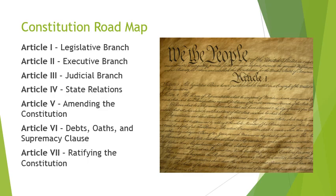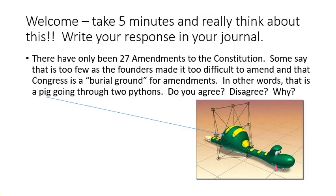Here's your constitution roadmap. It's important to have a good idea of the general layout. The legislative branch was created in Article One, executive branch in Article Two, judicial branch in Article Three. We'll get into state relations in Article Four when we talk about federalism. Article Five covers amending the constitution, which is the major focus for today. Article Six is the supremacy clause, very important for federalism. And Article Seven talks about ratifying the constitution.